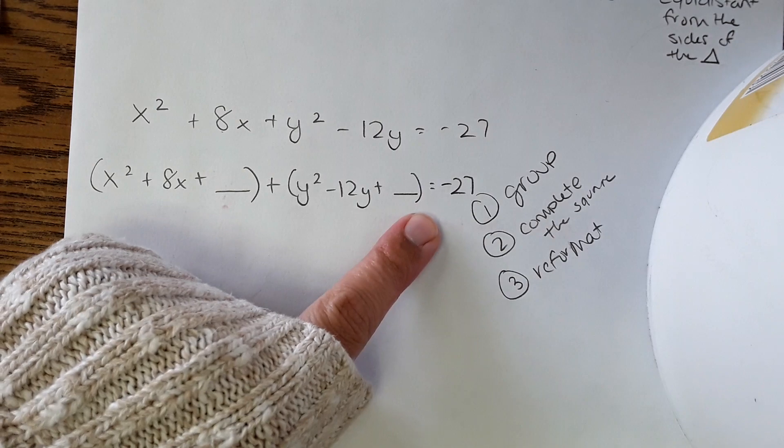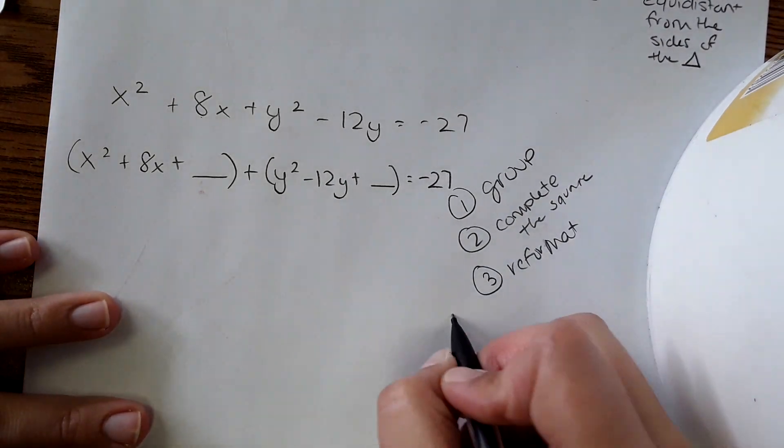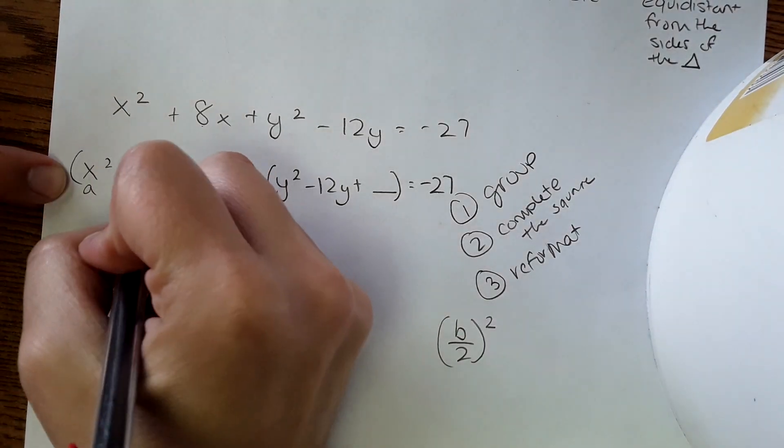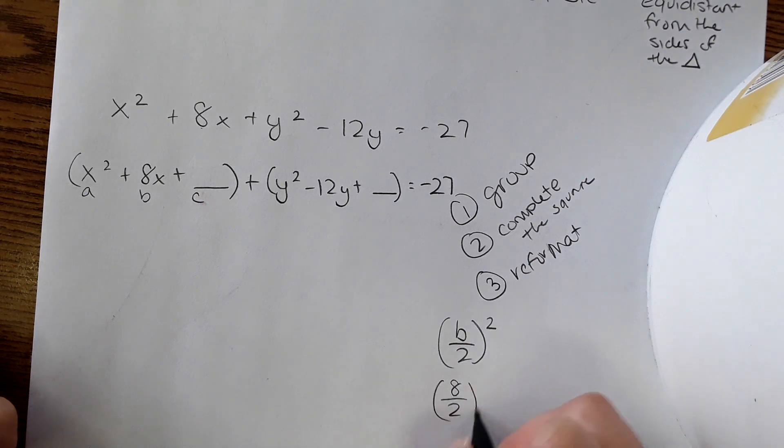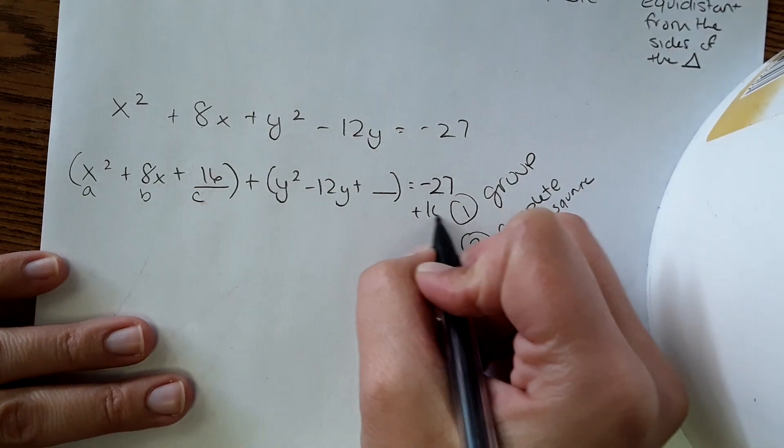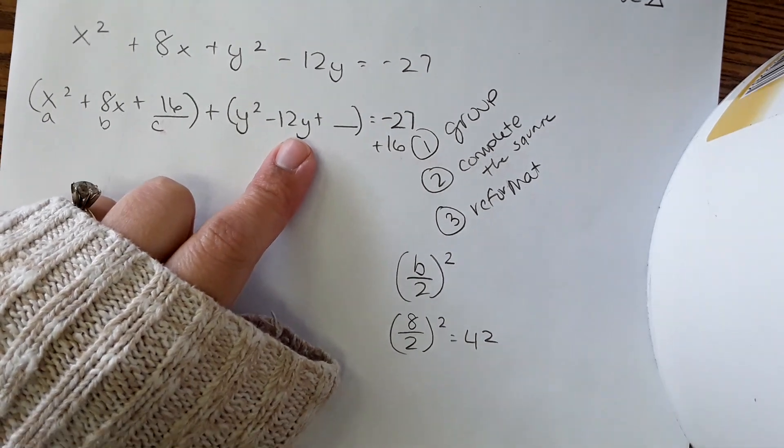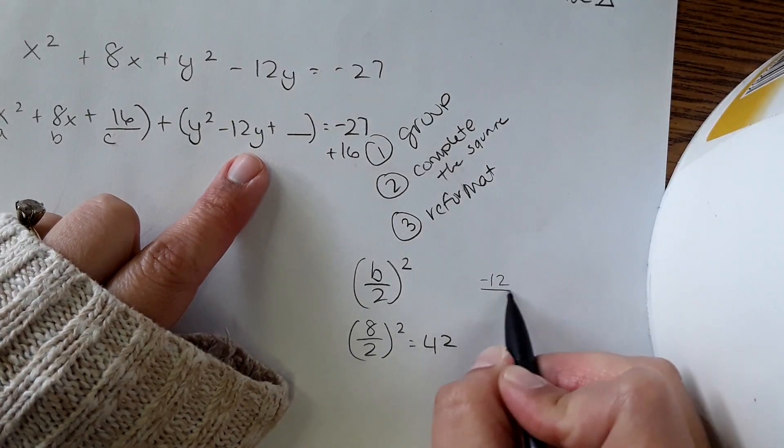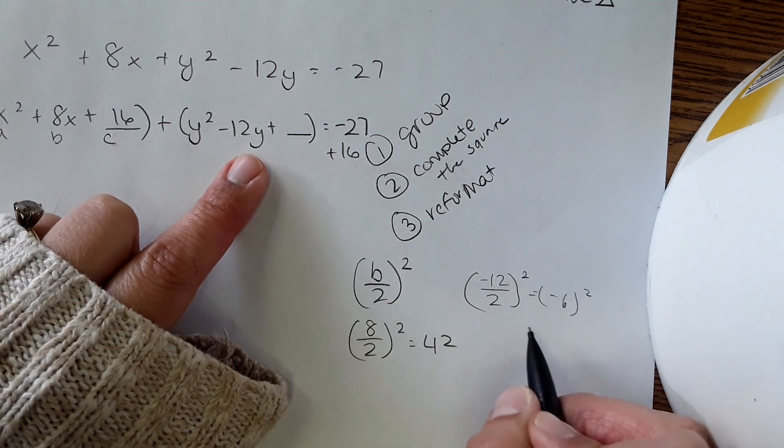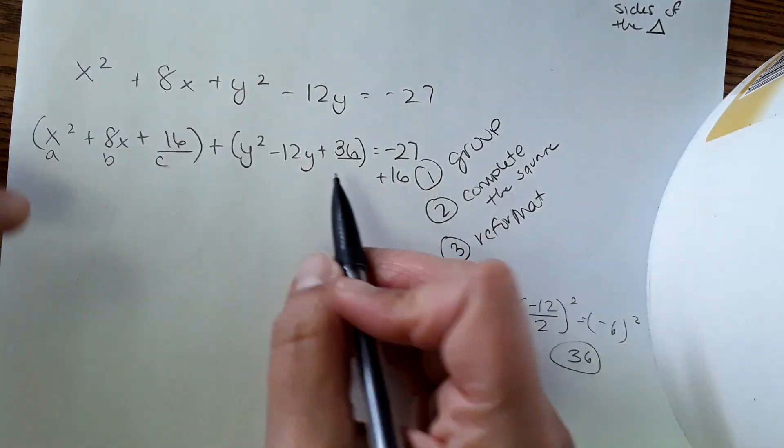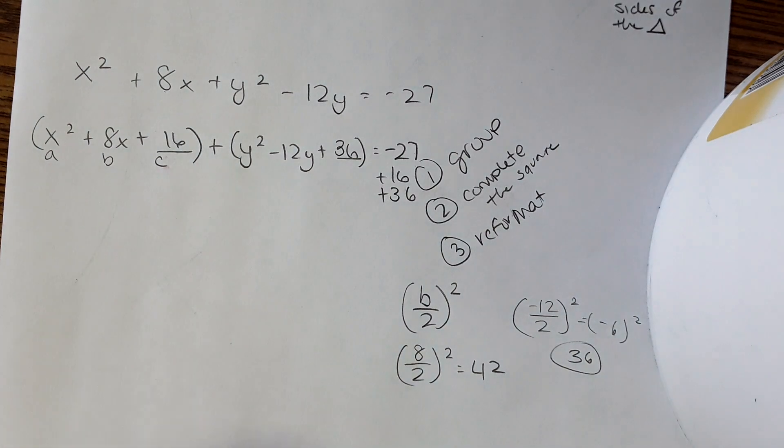We need to figure out what numbers go in these blanks. And the way you would do that, there's actually a formula. It is B over 2 squared. What is B? Well, this would be ABC. So B is 8. 8 over 2 squared. 4 squared is 16. Then we do the same thing for this one. It's going to be negative 12 over 2. Negative 12 over 2 squared. So that would be negative 6 squared is 36. So then we put the 36 here. And whatever you add to this side of the equation, you also have to add to this side. So that's why we're adding it over here too.